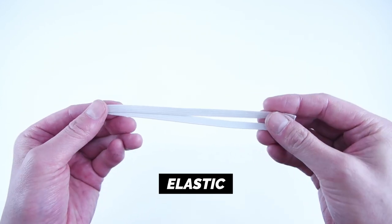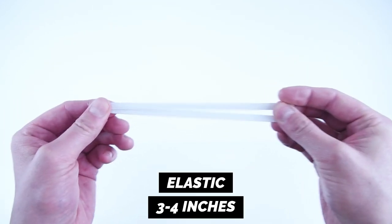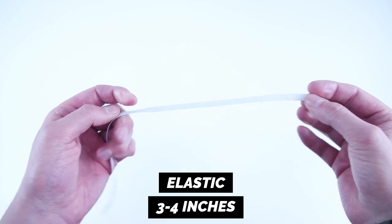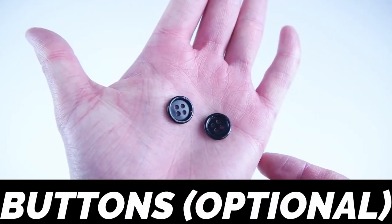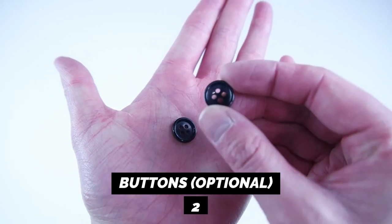You'll need three to four inches of elastic. I recommend using quarter inch elastic, but if you can't find a quarter inch, a half inch will do just fine. Two buttons, and this is optional if you want to make the mask holder.